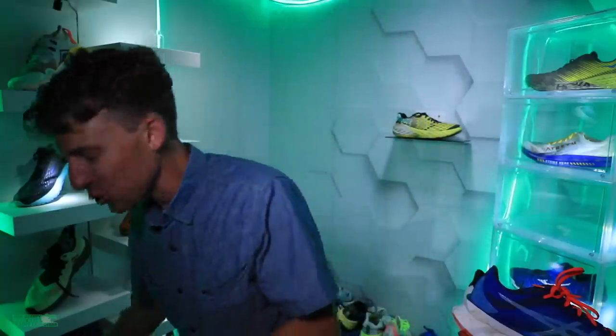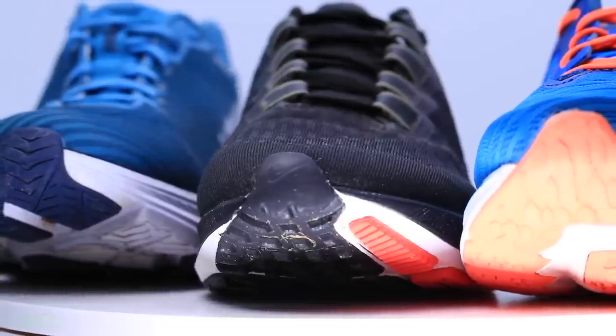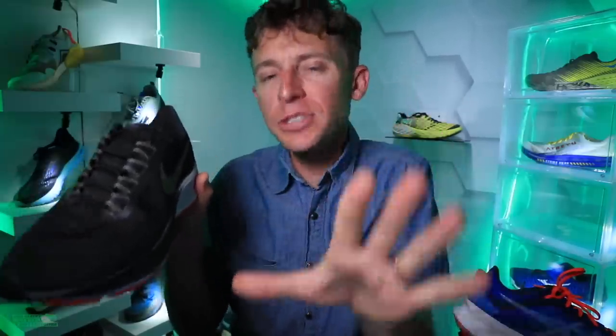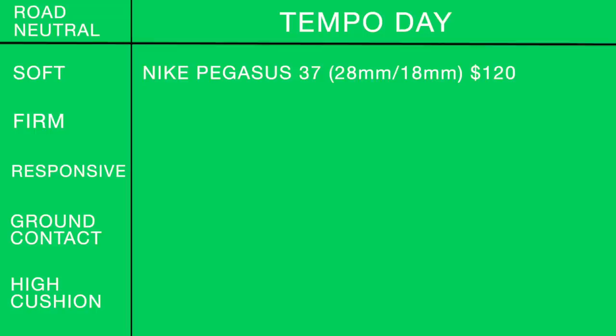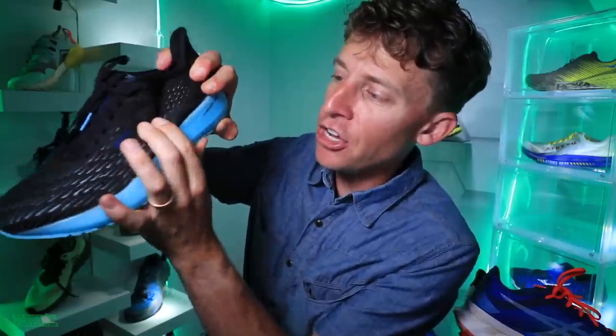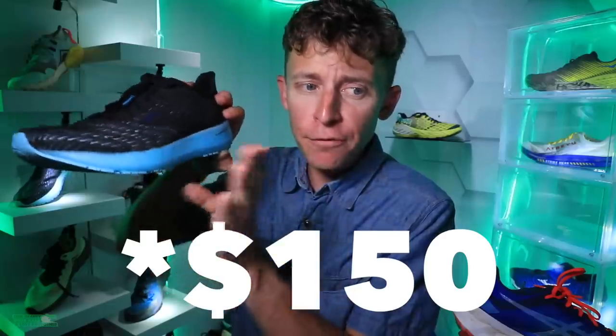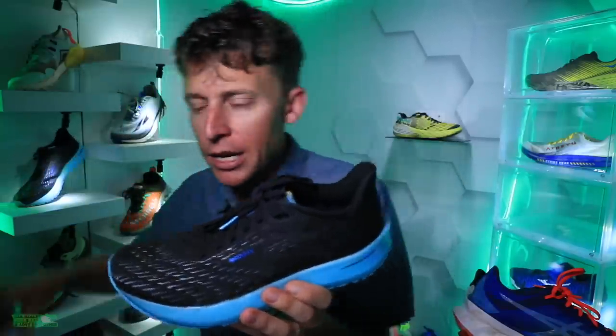Moving on to tempo day shoes. Back to another tweener conversation — the Nike Pegasus 37. It's a little heavy for a tempo day, but because of that airbag through the forefoot and the new React midsole, it could be an easy day shoe or also a gentle tempo day shoe. I also have to mention the Brooks Hyperion Tempo for soft landing — I ran in this recently and I'm really excited about this shoe. 26mm in the heel, 18mm in the forefoot, $115. The Brooks Hyperion Tempo is significantly lighter than the Pegasus 37.